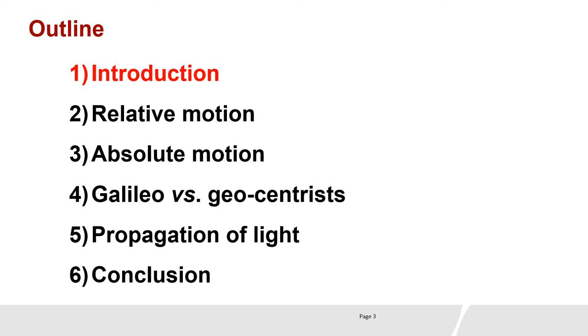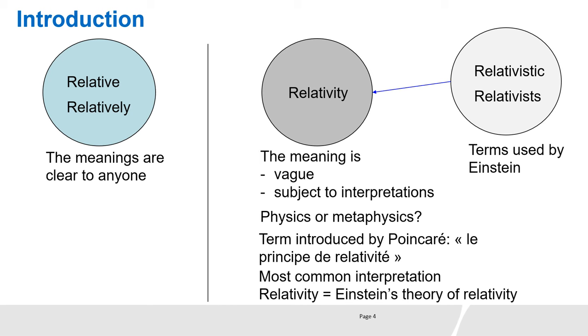Introduction. We can divide the five terms into three groups. Everyone can understand clearly what relative and relatively mean. On the other hand, the meaning of relativity is vague and subject to interpretations. It is not clear if this is part of physics or metaphysics. The term relativity was introduced by Poincaré. The most common interpretation nowadays is that relativity is Einstein's theory of relativity. The term relativistic and relativists were used by Einstein. They exist only because the term relativity was invented.